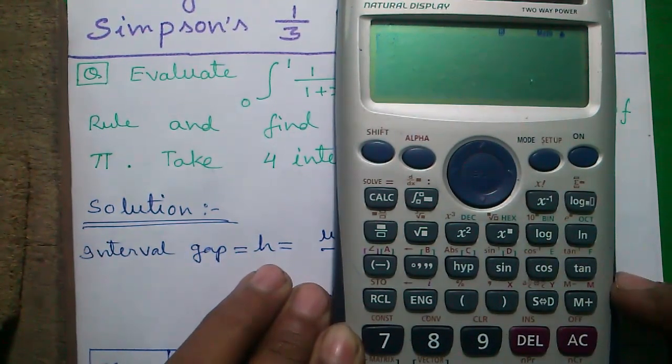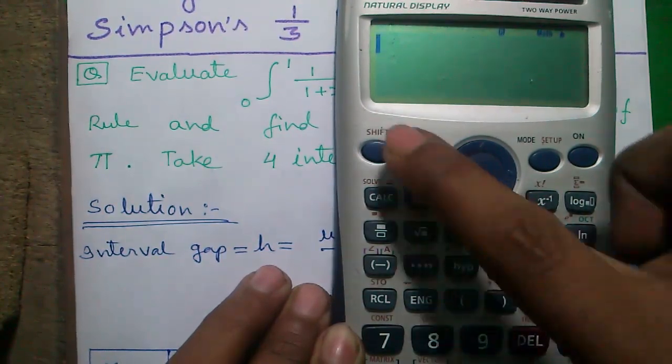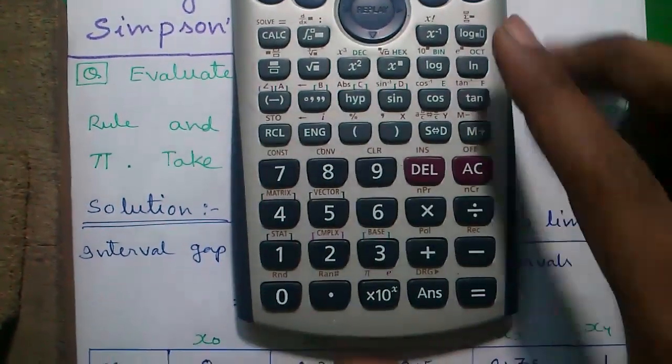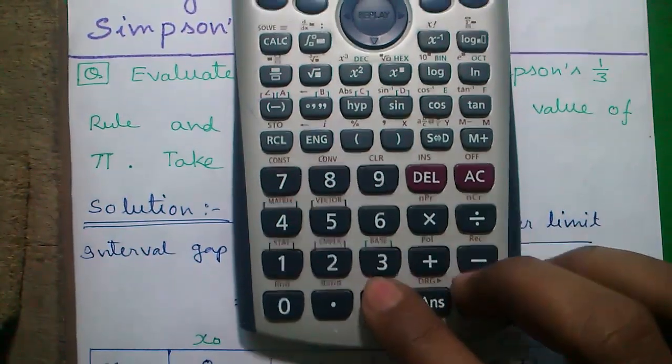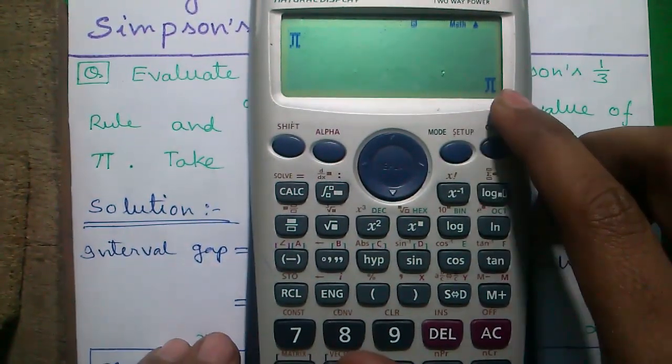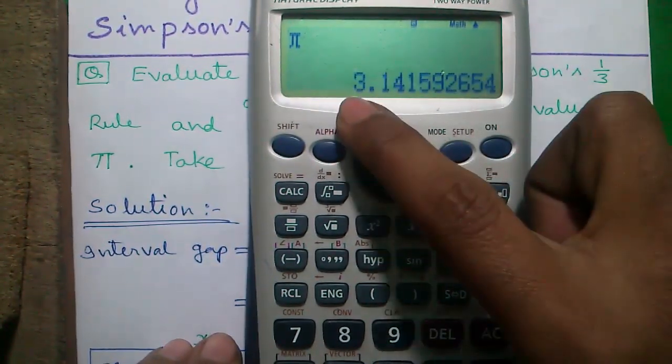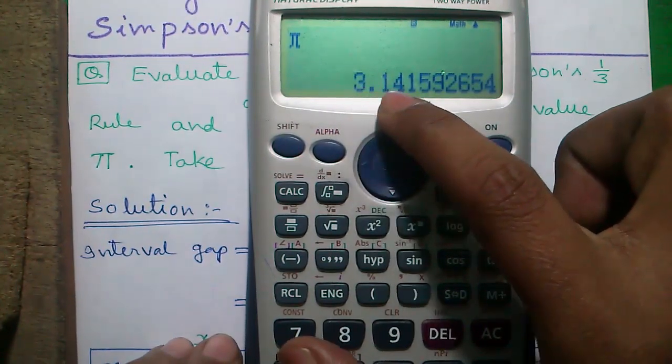Next, I will tell you how to find out the value of pi. Press shift and this and this button, and press equals to. So you will get pi. Press s2d button. So pi is 3.1415.